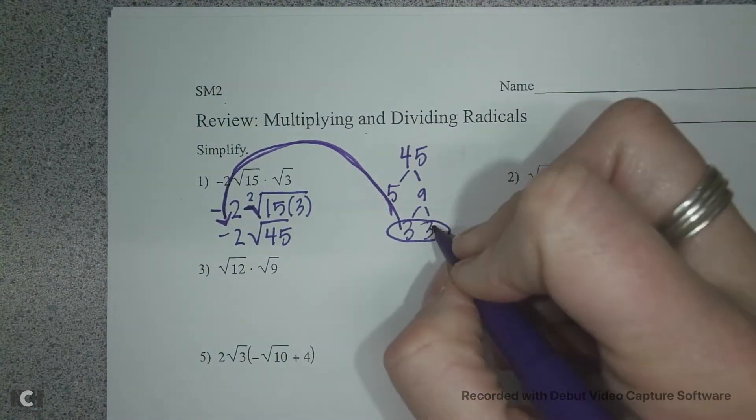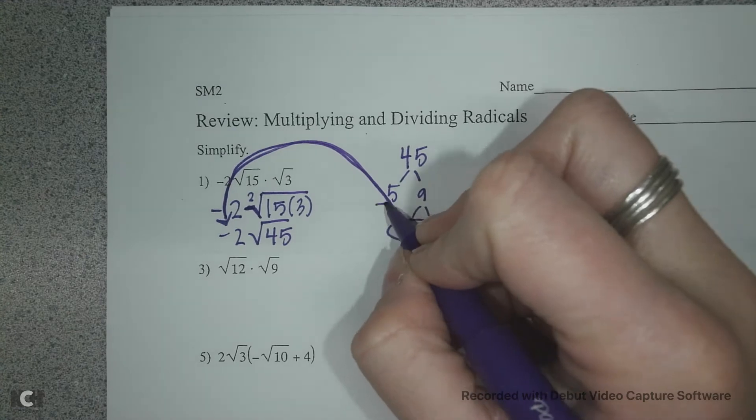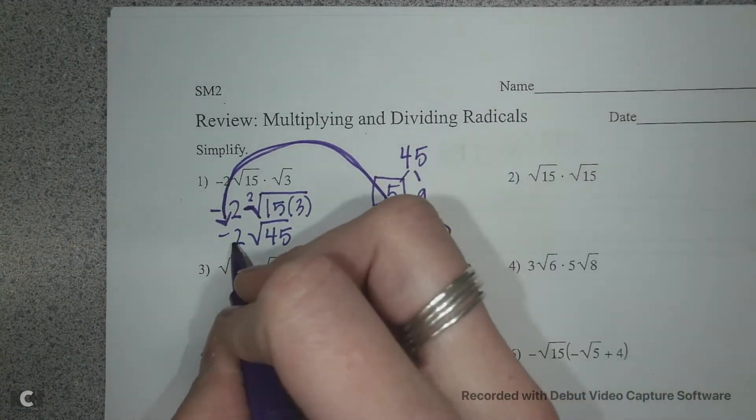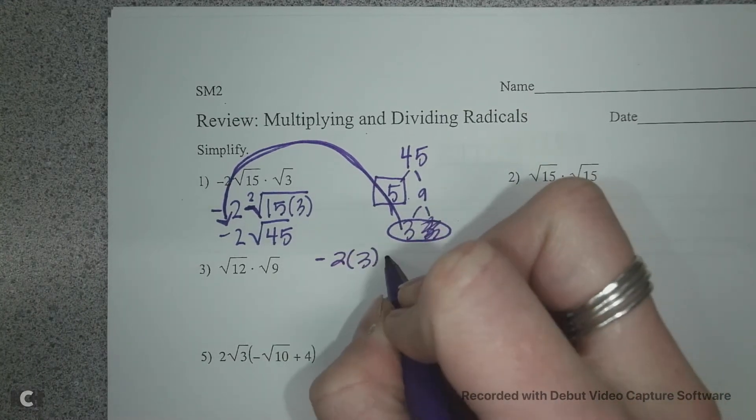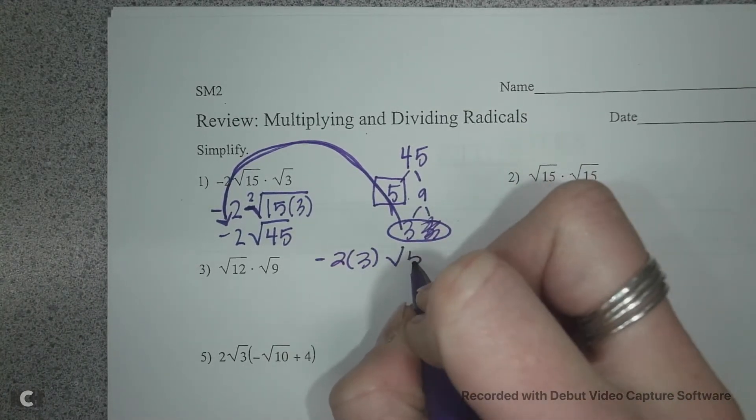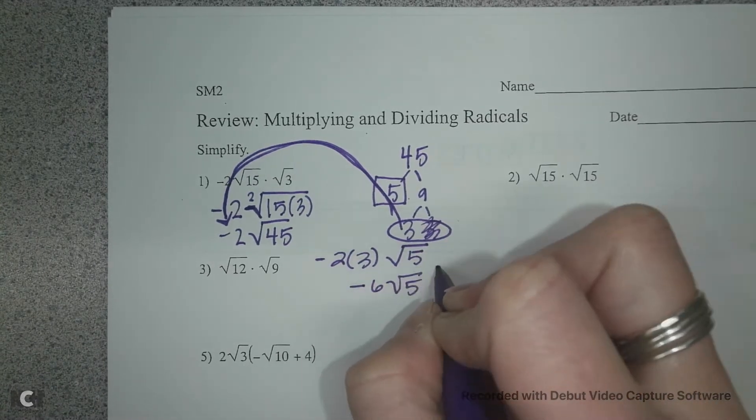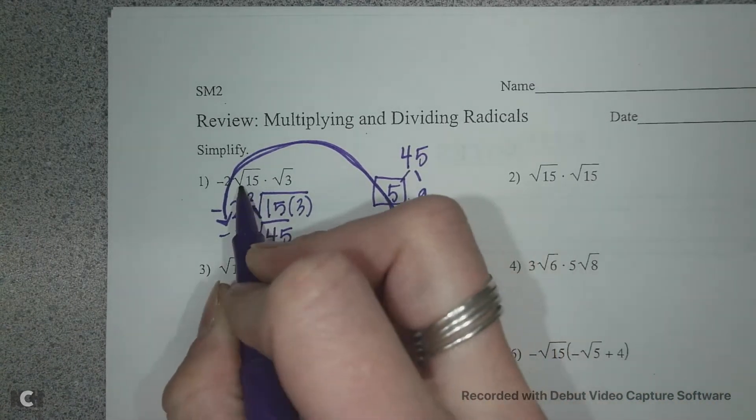So I multiply negative 2 times 3 square root of 5. Negative 2 times 3 is negative 6 root 5. So we multiply these two together and then we reduce our radical.